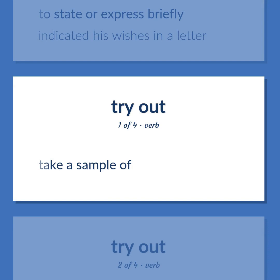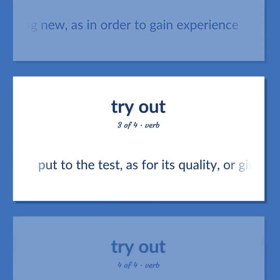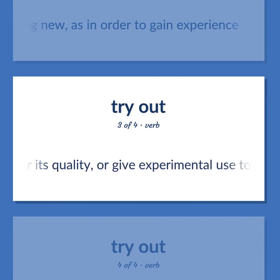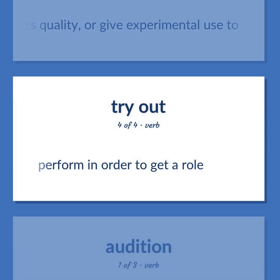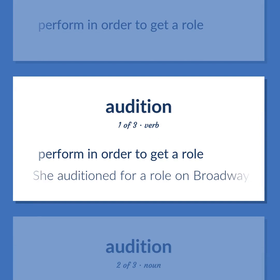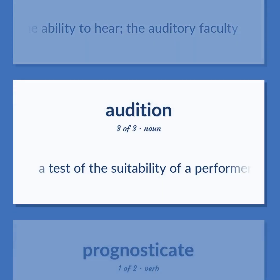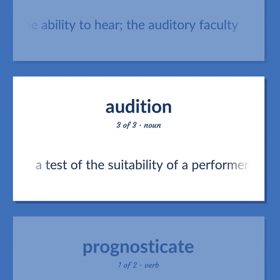Take a sample of. Try something new, as in order to gain experience. Put to the test, as for its quality, or give experimental use to. Perform in order to get a role. Audition: she auditioned for a role on Broadway. The ability to hear; the auditory faculty. A test of the suitability of a performer.